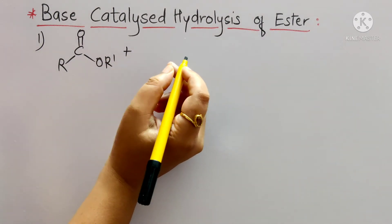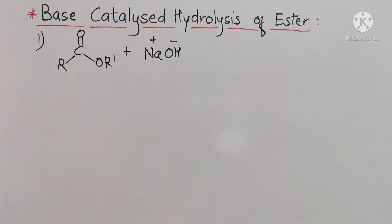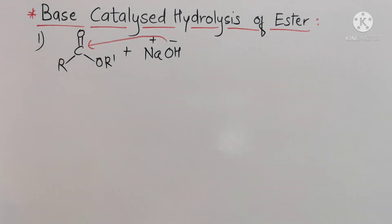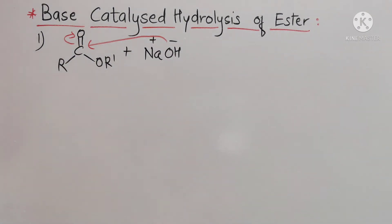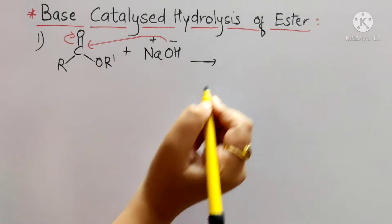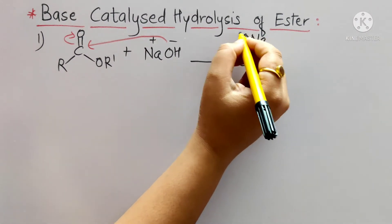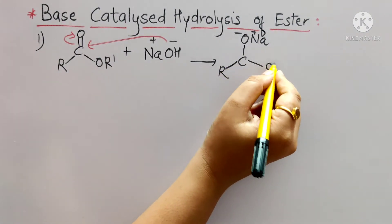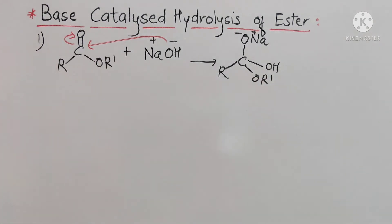The addition of the nucleophile takes place in the form of NaOH, dissociating into Na⁺ and OH⁻. The attack of this nucleophile takes place on the carbonyl carbon, and Na⁺ gets attached to the oxygen. The formation of a tetrahedral intermediate takes place, written as C with O-Na, O⁻ Na⁺, with OH attached to the carbon atom and O-R'. In the first step, the tetrahedral intermediate is formed.